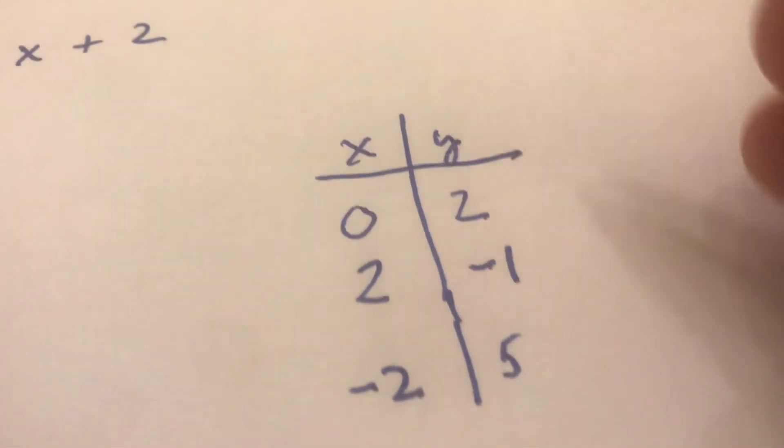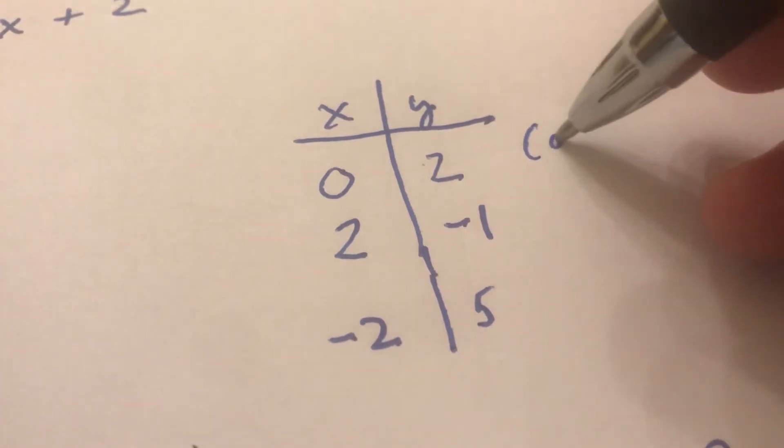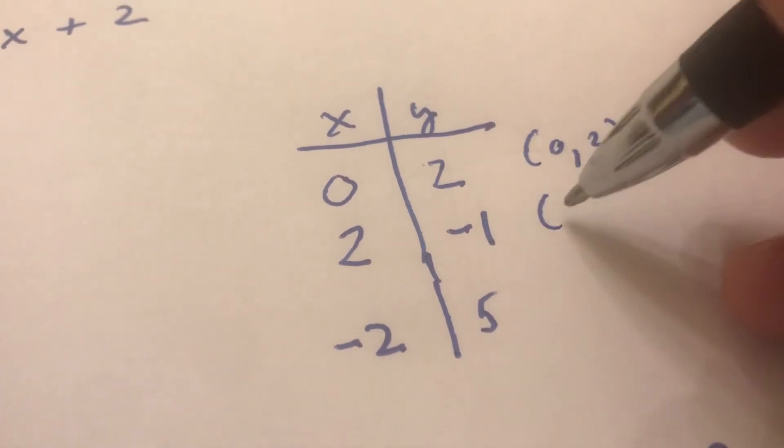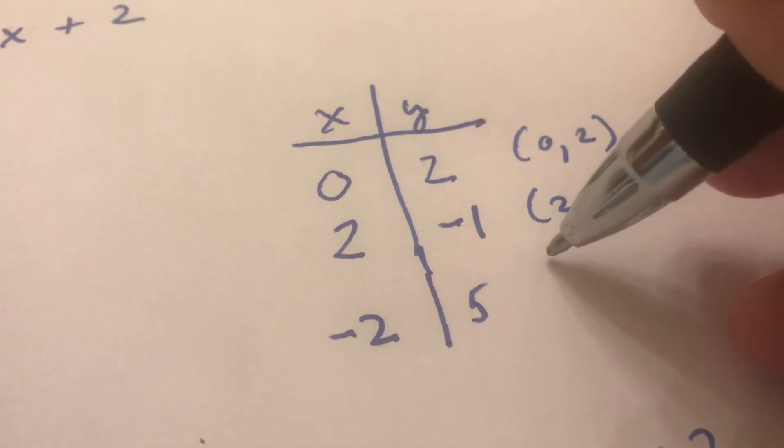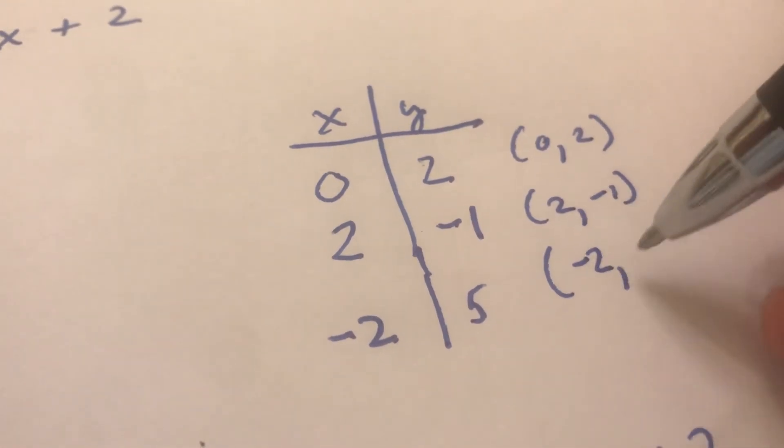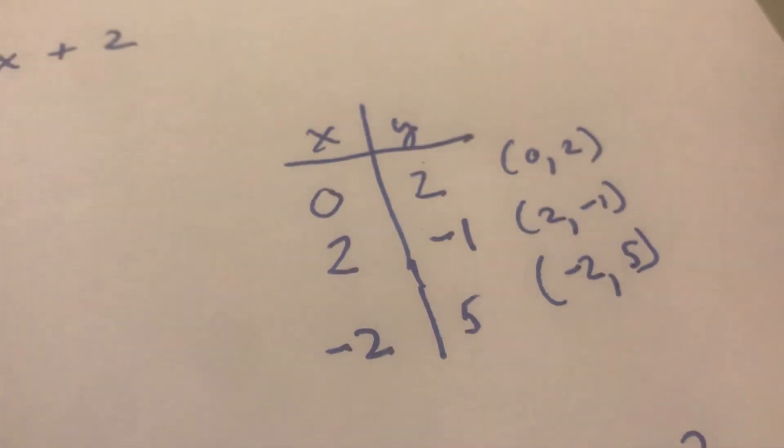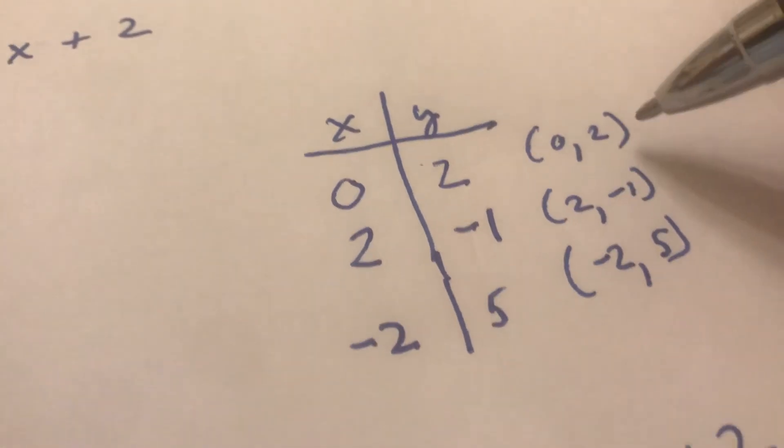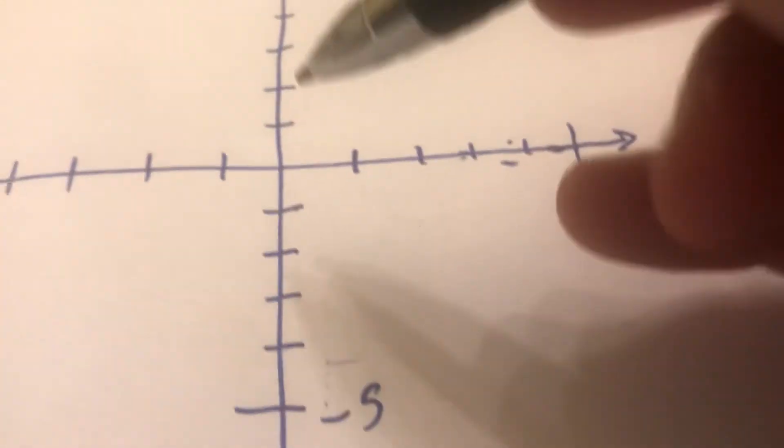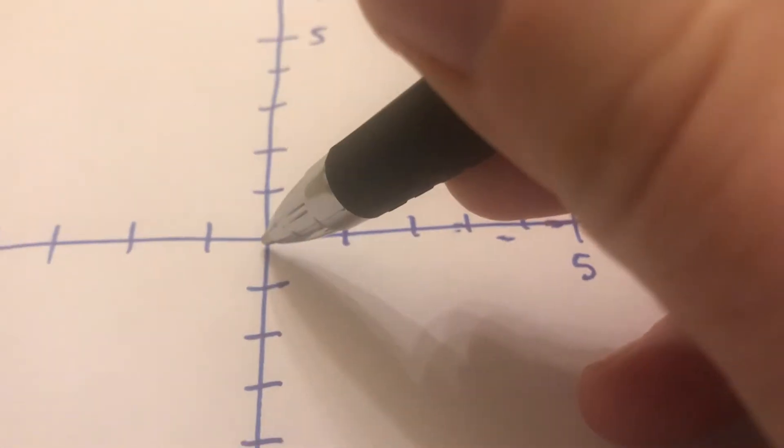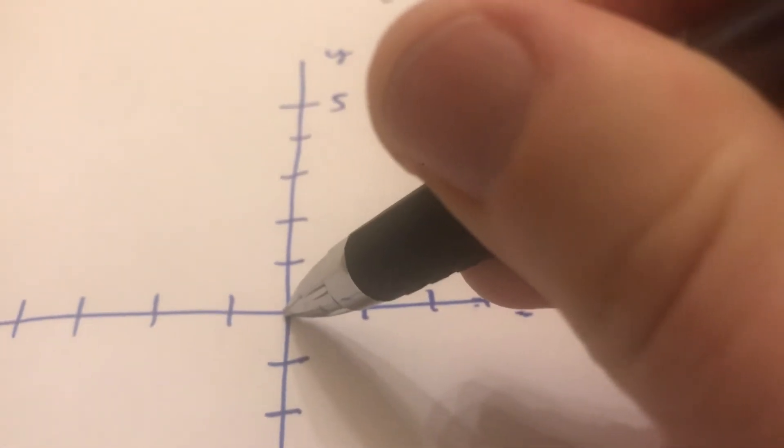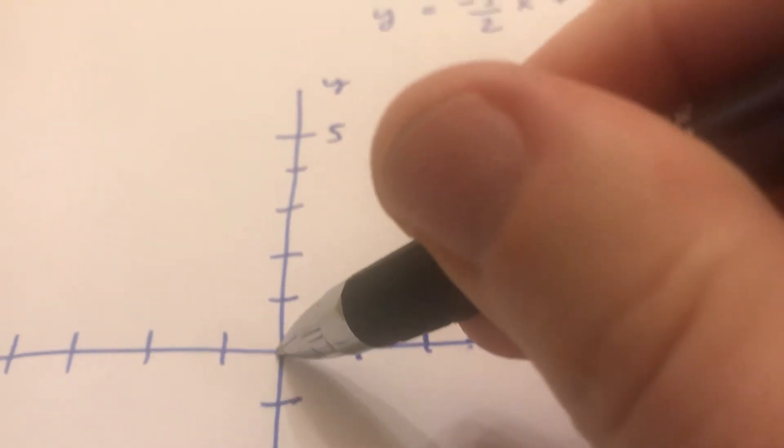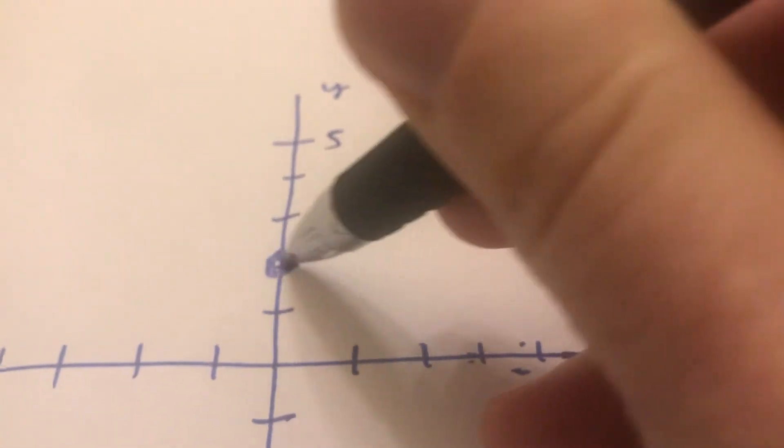So those are my three points and I can write them as ordered pairs. I don't have to but I can. Remember when we write them as ordered pairs the x value goes first and the y value goes second. It's like alphabetical order. So now I'm gonna graph (0, 2). So I go to the origin right here where the two axes intersect. x equals 0 means I just stay here and I go up 2. That's my first point.